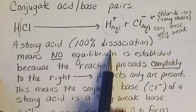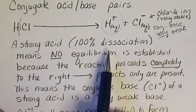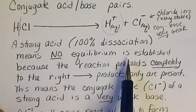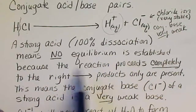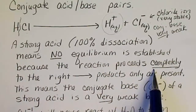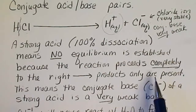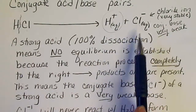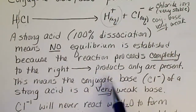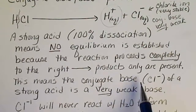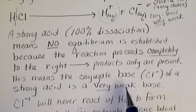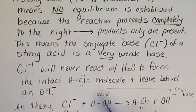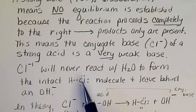A strong acid has 100% dissociation, which means no equilibrium is established because the reaction proceeds completely to the right — only products are present. This also means that the conjugate base of a strong acid will never react with water to form an intact HCl molecule.